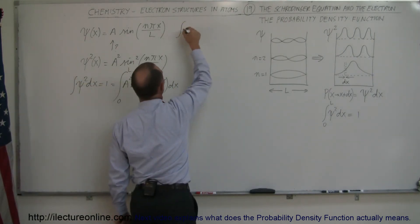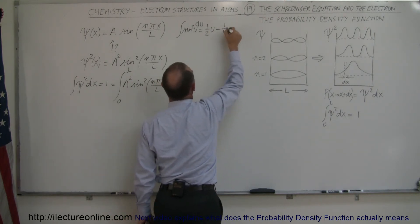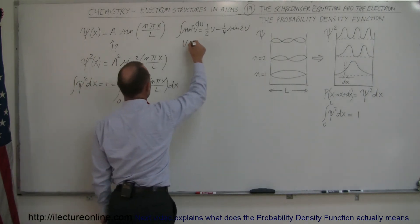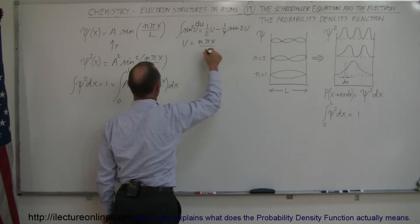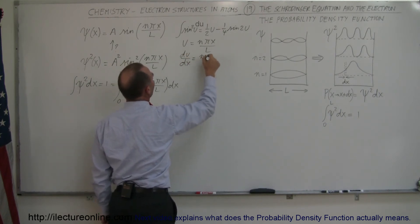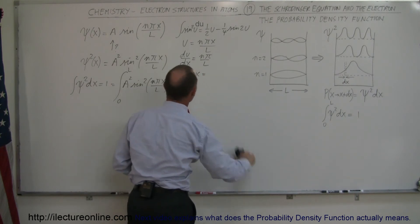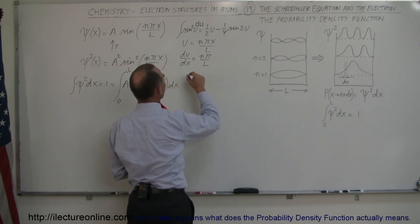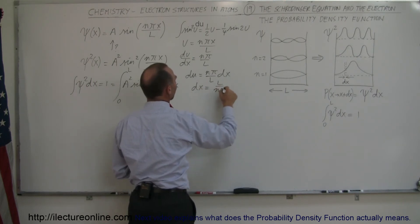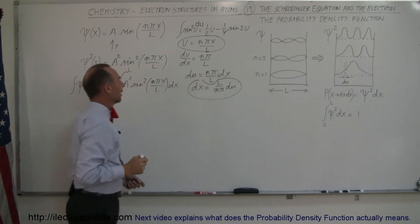The integral of sine squared of u equals one-half u minus one-quarter sine of 2u. We make the substitution: let u equal nπx over L, so du/dx equals nπ over L, which means dx equals L over nπ times du. So now we have a substitution for u and a substitution for dx.